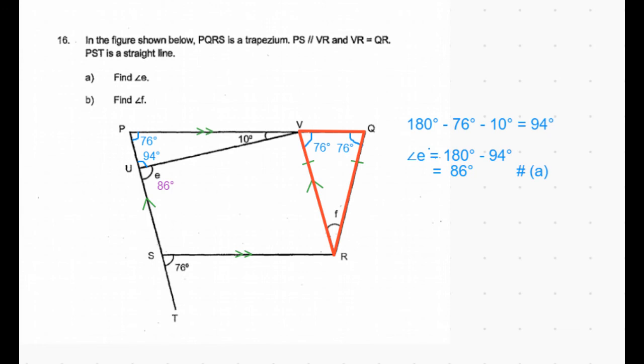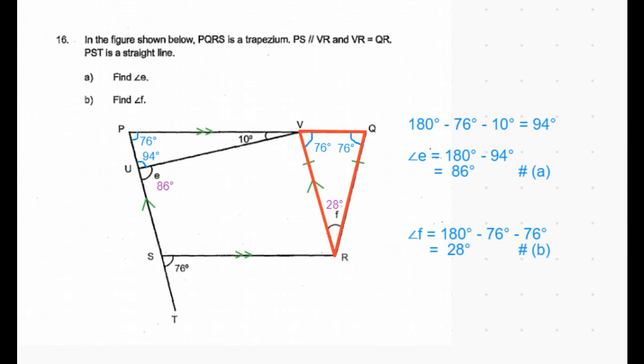The sum of angles inside a triangle is 180 degrees. We can find the third angle: 180 minus 76 minus 76 equals 28 degrees. That's the answer to part B: angle F is 28 degrees.